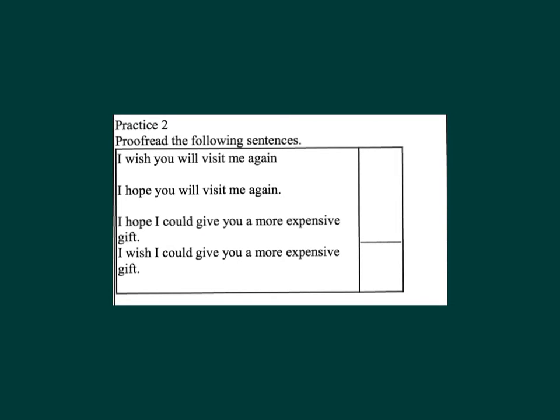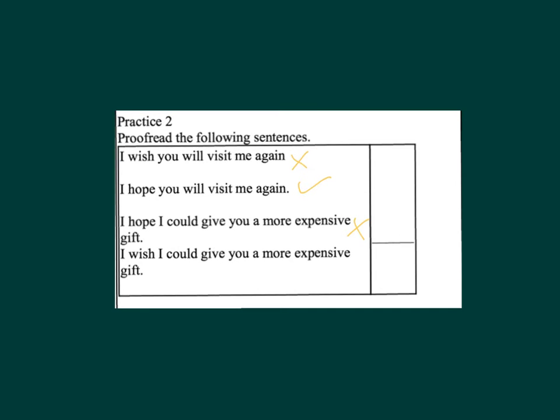Proof-read the following sentences. 20. 'I wish you will visit me again' — this is wrong. 21. 'I hope you will visit me again' — this is correct. 22. 'I hope I could give you a more expensive gift' — this is wrong. 22. 'I wish I could give you a more expensive gift' — this is correct.